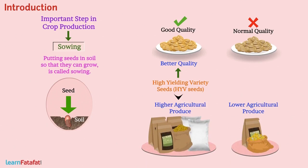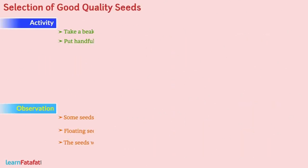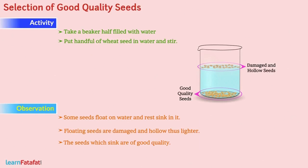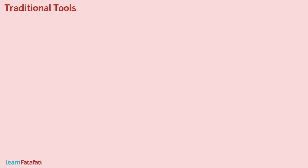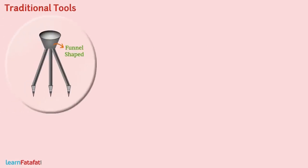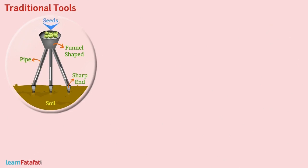To select good quality seeds, we can perform an activity: seeds which sink in water are of good quality, and those which float are of bad quality. A traditional sowing tool is funnel-shaped, provided with two or three pipes with sharp ends that go into the soil. Seeds fill into the funnel, pass through the pipes, and go deep into the soil.